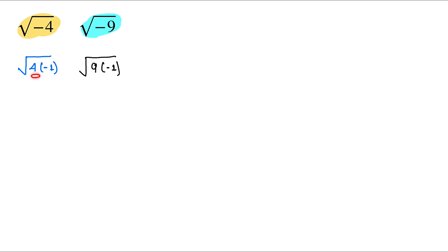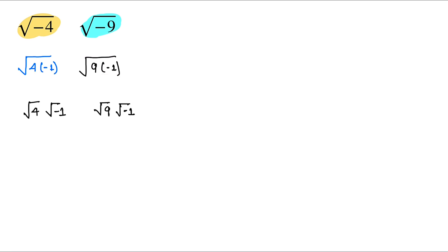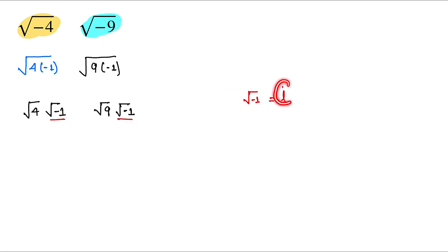Now we break this further. Under root minus 4 can be written as under root 4 into under root minus 1, and under root minus 9 as under root 9 into under root minus 1. We know that the value of under root minus 1 is equal to i. So now we put this here: i times under root 4, into i times under root 9.